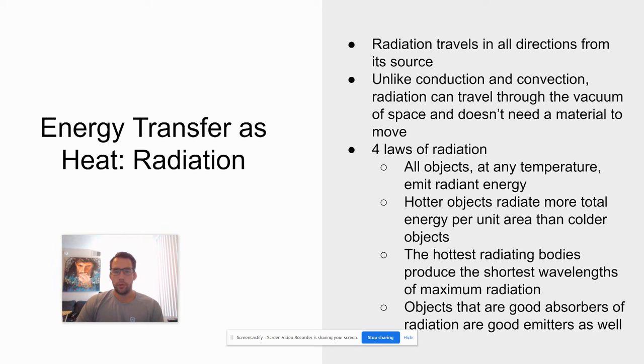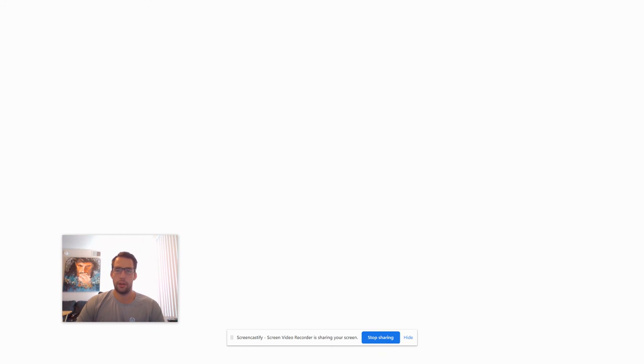Objects that are good absorbers of radiation are good emitters as well. So if it can take in a lot of radiation, it can also emit quite a bit of radiation.